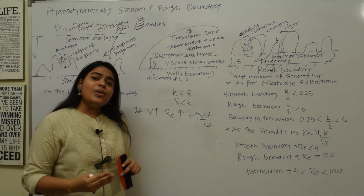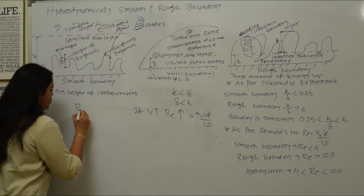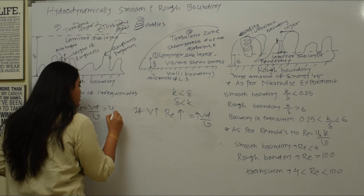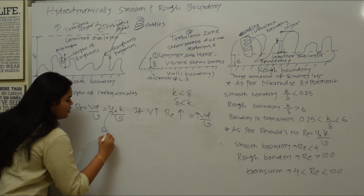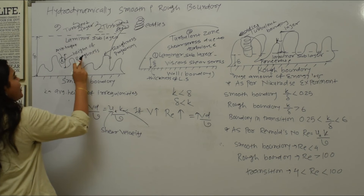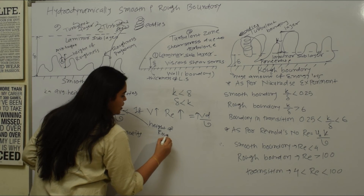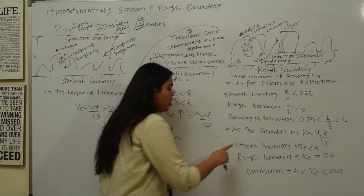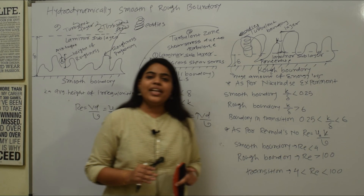In terms of Reynolds number, we use u* · k / ν, where u* is the shear velocity, k is the height of roughness, and ν is the kinematic viscosity. This is denoted as the roughness Reynolds number. For a smooth boundary, this Reynolds number is less than 4; for a rough boundary, it is greater than 100; and the transition zone is between 4 and 100.